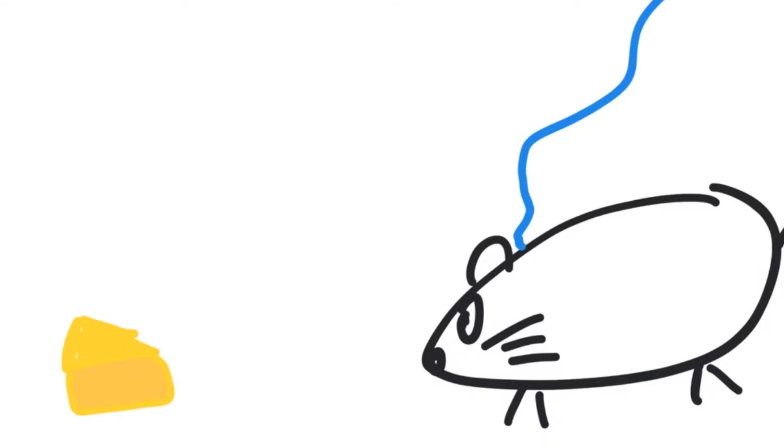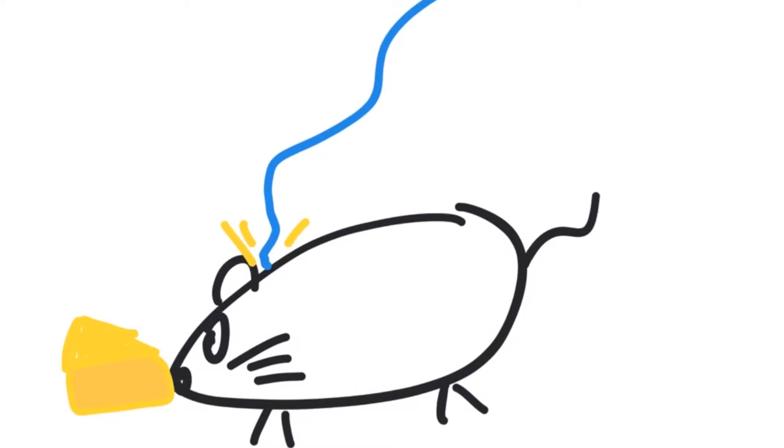When scientists used an optic fiber cable to shine light onto optogenetically modified neurons, they found that the mouse would start eating. This could provide clues about brain pathways and their associated diseases, such as depression and OCD,